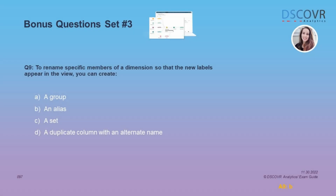Let's say you want to rename specific members of a dimension so that the new labels appear in the view when you create your visualization. What do you need to create? You simply need to create an alias name for those specific dimension members.